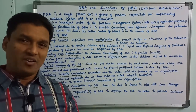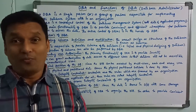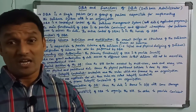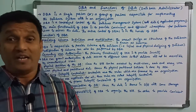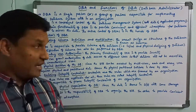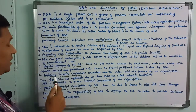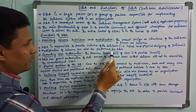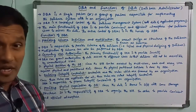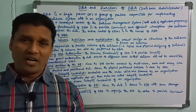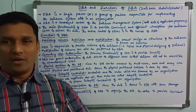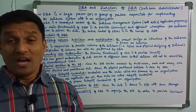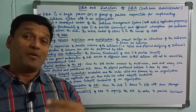Logical design and physical design are part of schema definition. Modification of schema can also be performed by DBA. Once a database is created and schema definition is needed, the schema can be modified. That is the first functionality of DBA.